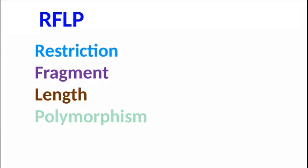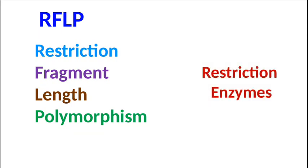Restriction Fragment Length Polymorphism is a molecular technique that uses restriction enzymes to identify variations in homologous DNA sequences. Let's understand this technique in detail.